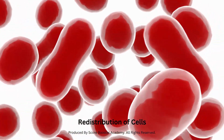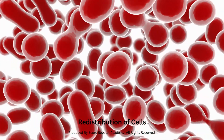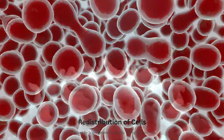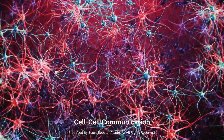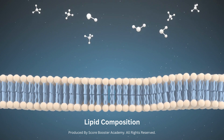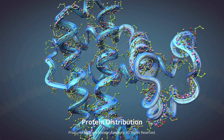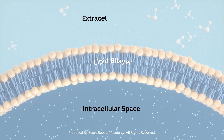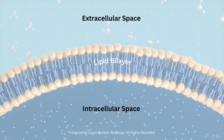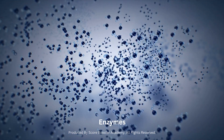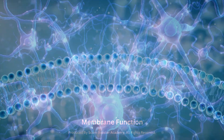This dynamic organization is essential for membrane functionality, including selective permeability, signal transduction, and cell-cell communication. The lipid composition and protein distribution are not symmetrical between the inner and outer leaflets of the lipid bilayer. This asymmetry is maintained by specific enzymes and plays a role in membrane function and cell signaling.